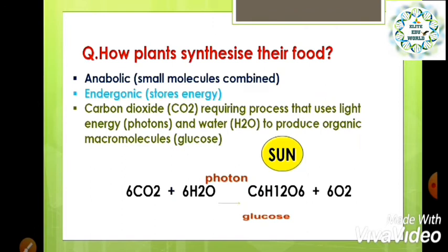The second question is: how do plants synthesize their food? When plants prepare their food themselves and animals also depend on plants for their necessity of food, then how do plants synthesize their food? The anabolic reaction takes place in the plants, in which small molecules combine to form an energetic molecule which provides energy, and this process is endergonic.